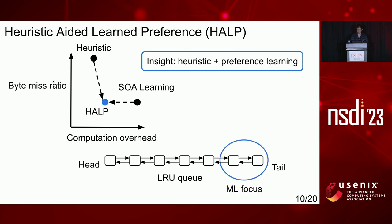Therefore, we can selectively bias our learning, focusing only on the tail instead of considering the entire cache. By leveraging efficient heuristic algorithms to filter easy candidates, we save overhead on training and inference. This design also increases robustness because even when the machine learning model degrades, we still select eviction candidates from the LRU tail, and the algorithm would behave similarly to LRU.